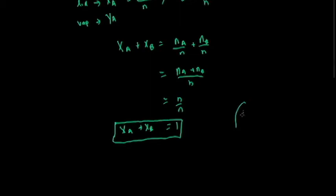It's nothing other than the same concept as if you have two fractions. This is a third, this is two-thirds. They have to be 1. One-third plus two-thirds equals 1. It's a mole fraction, so it's simply a ratio.